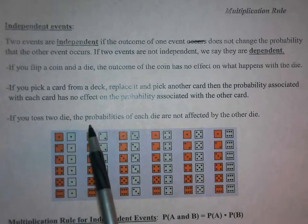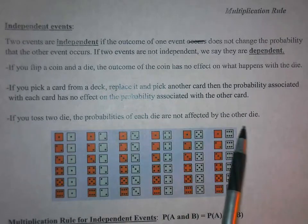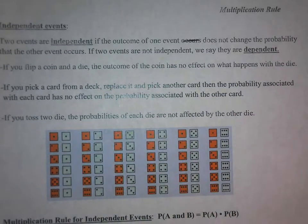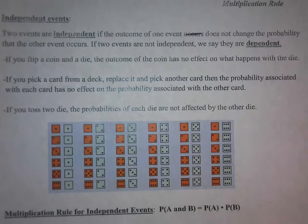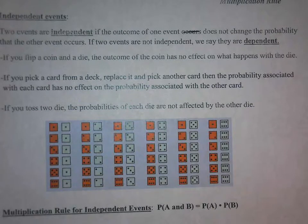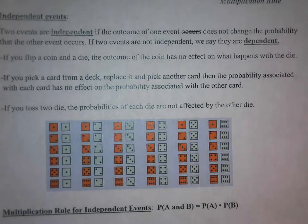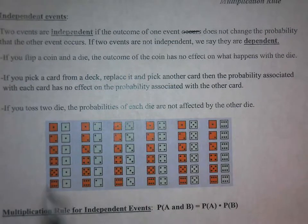If you toss two dice, the probabilities of each die are not affected by the other. When you roll the first die and then roll the second die, it does not matter what happened on the first one — the second event will still have the same probabilities. I give you the sample space here for when you roll two dice.